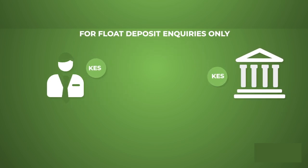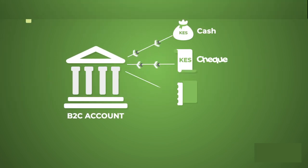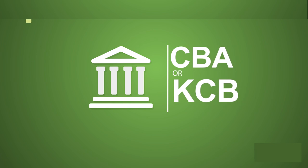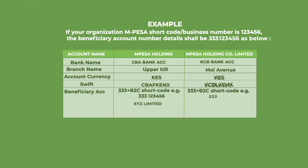To make a deposit to your Business to Customer account, you shall be required to make either a cash, check, RTGS, or EFT transfer to the M-Pesa Holding Company bank account at either KCB or CBA. The beneficiary bank account details at KCB or CBA shall be a combination of a prefix 333 and the M-Pesa Business number or shortcode.